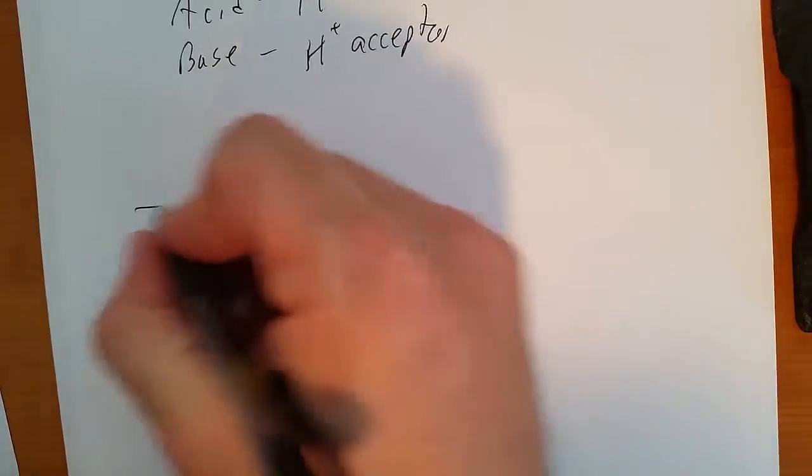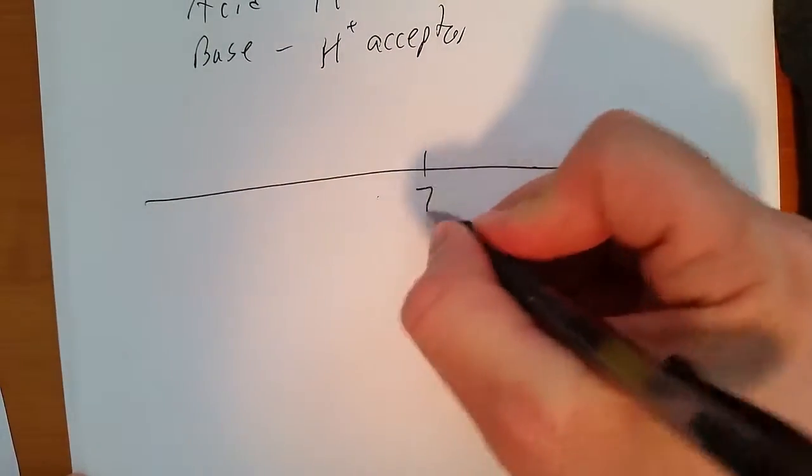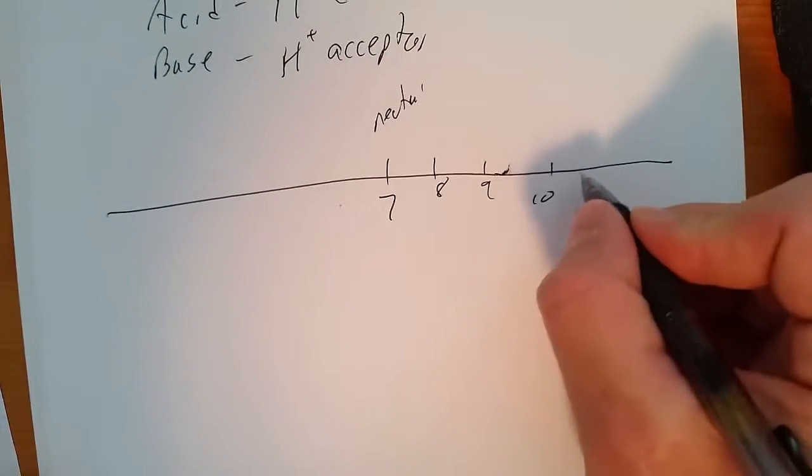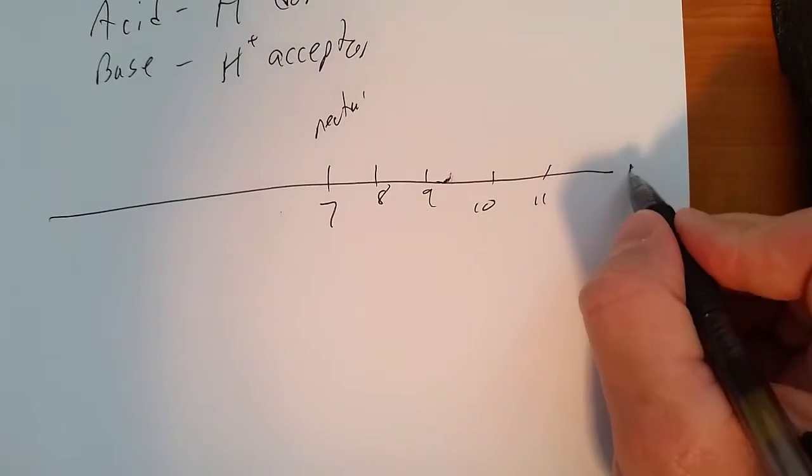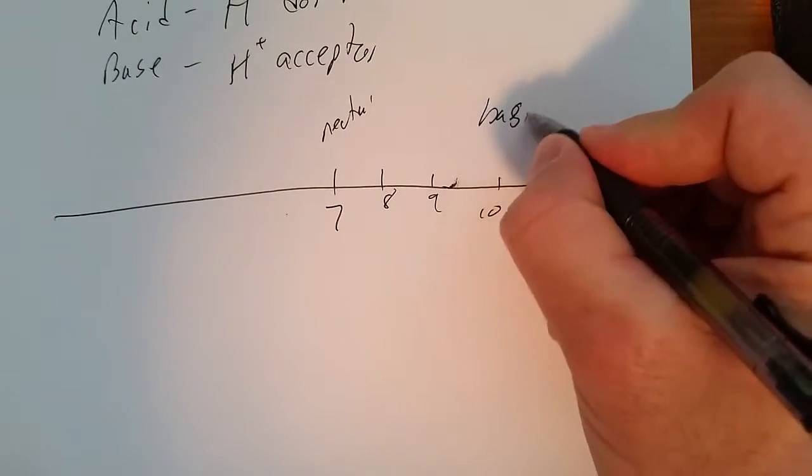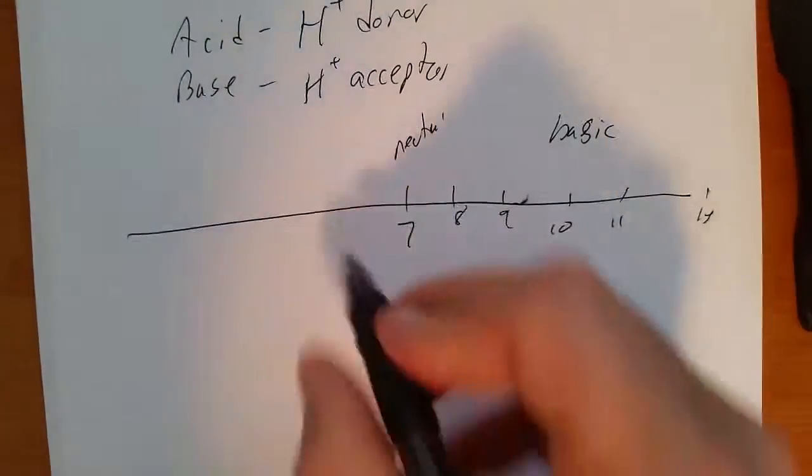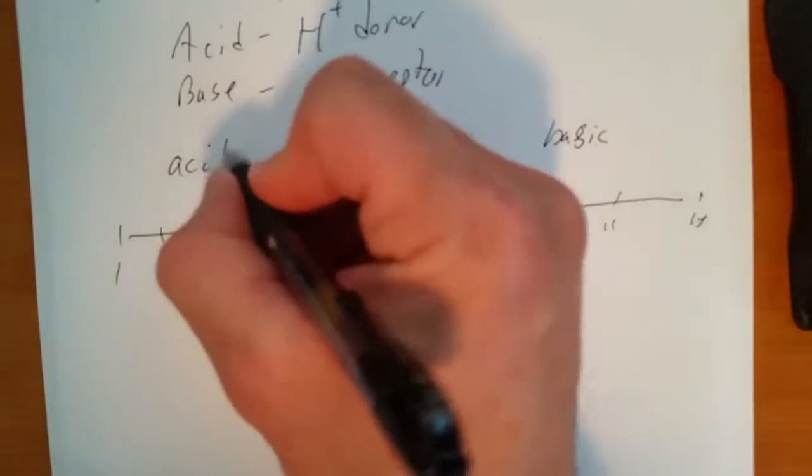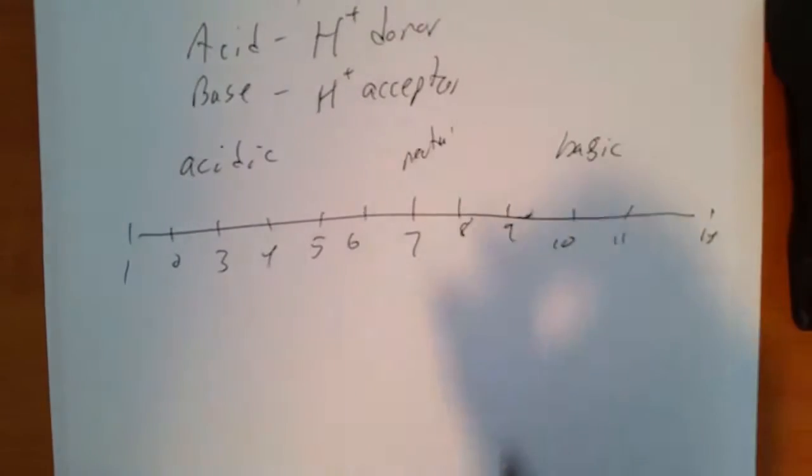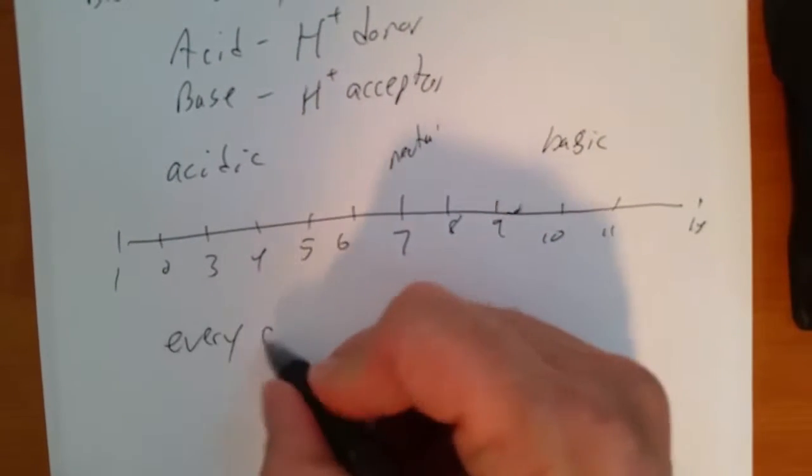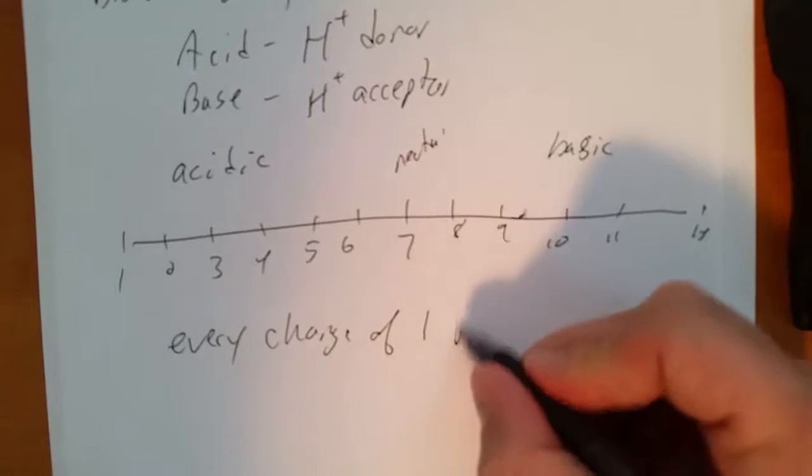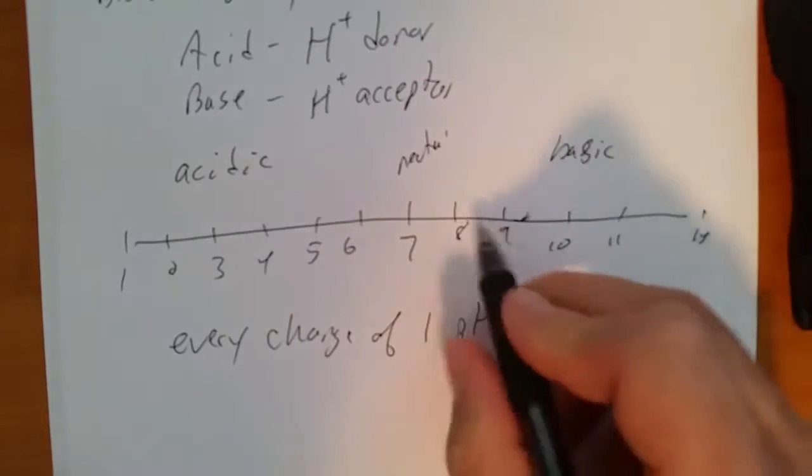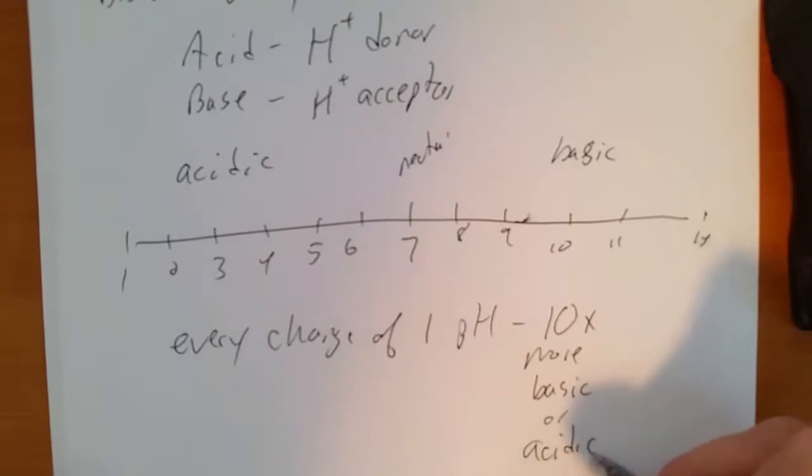pH. Scale 7 is neutral, greater than 7, up to 14, is basic, lower than 7 is acidic. For every change of 1 pH, it's becoming 10 times more basic if you're going to the right, or acidic if we're going to the left.